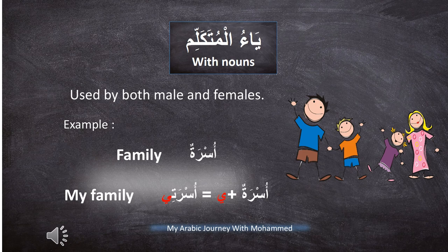السلام عليكم ورحمة الله وبركاته. I want to speak today about ياء المتكلم with nouns in Arabic language. ياء المتكلم is used by both male and females. For example: أسرة means 'family.' If you want to add ياء المتكلم to أسرة, you say أسرتي, which means 'my family.'